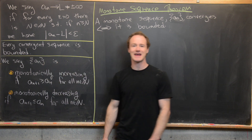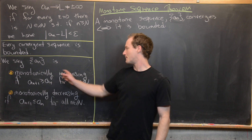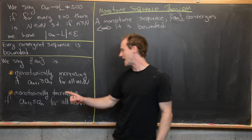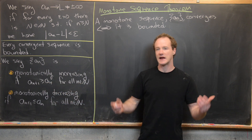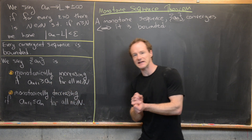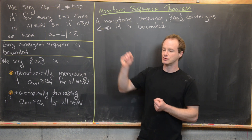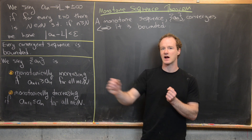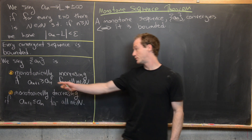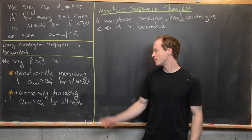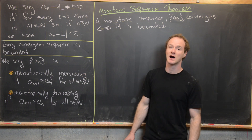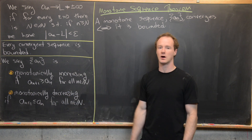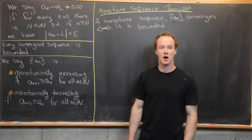Given a sequence a_n, we say that it's monotonically increasing if a_{n+1} ≥ a_n for all n in the natural numbers — in other words, it's getting bigger as you move forward. Notice this is a non-strict increasing, so it could be a constant sequence. Some authors put a strict inequality there, but we'll stick with this one. We say it's monotonically decreasing if a_{n+1} ≤ a_n for all n in the natural numbers.